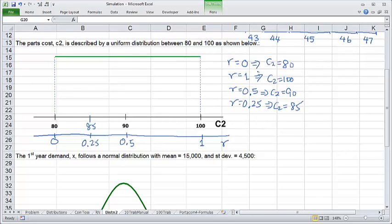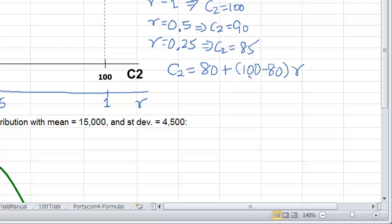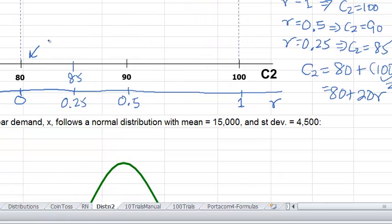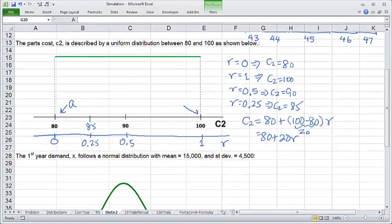In general, we need some kind of formula to go from the r value to the C2 value. That formula is C2 equals 80, the smallest value of the interval, plus the length of the interval, that is, 100 minus 80 times the random number. 100 minus 80 is 20, so the formula is 80 plus 20r. In general, we call the smallest number a and the largest number b. And the formula looks like c2 is a plus b minus a times r.